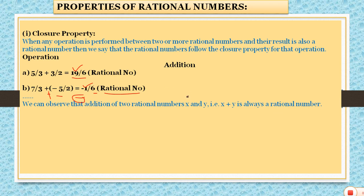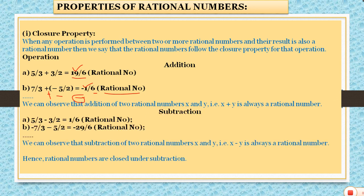Now moving towards the next operation — subtraction. Let's take 5 by 3 minus 3 by 2. Taking LCM as 6 and solving, the numerator is 1, so we get 1 by 6, which is in p by q form — it is a rational number again.